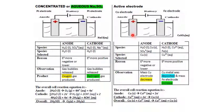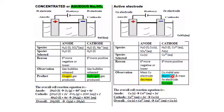Case 6: Active electrode. When an active electrode such as copper is used, copper solid is chosen at the anode because its standard reduction potential is more negative. The anode equation shows Cu(s) → Cu²⁺(aq) + 2e⁻, so the mass of the anode decreases as it dissolves. At the cathode, Cu²⁺ is reduced and copper metal is deposited, so the mass of the cathode increases.